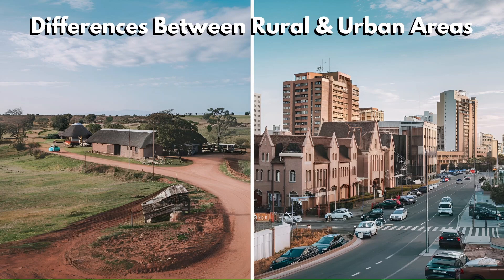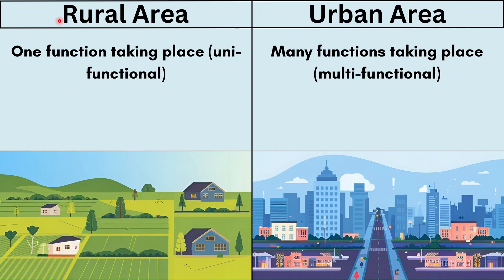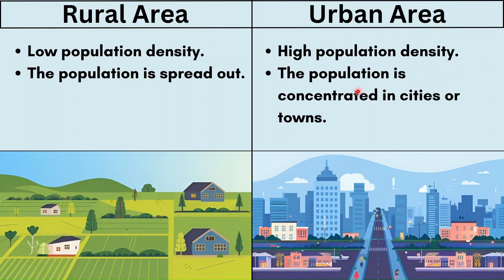We may have an idea of the differences between a rural and urban area, but if you were asked in an exam to write it down, how would you do that? In a rural area there's only one function taking place — this makes it unifunctional. The function can be farming, fishing, forestry, or mining. In an urban area there are many functions taking place, making it multifunctional — secondary, tertiary, including healthcare and schooling.